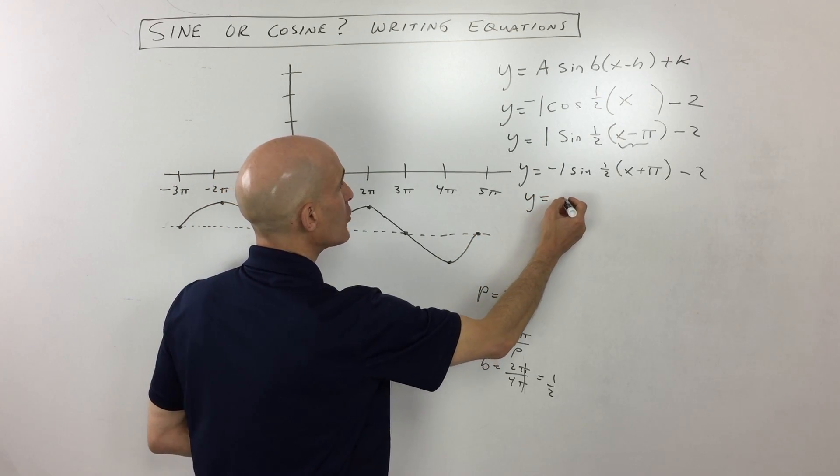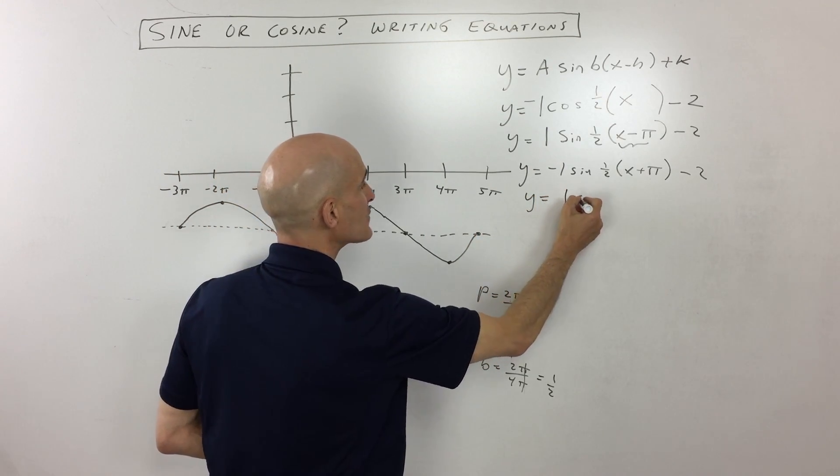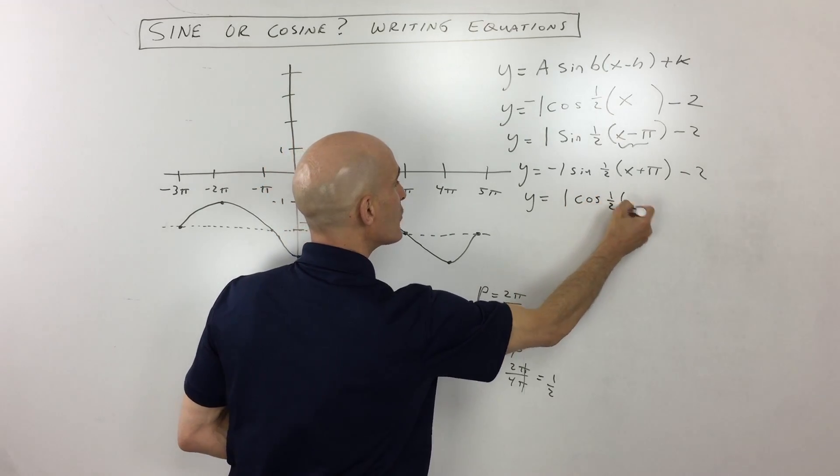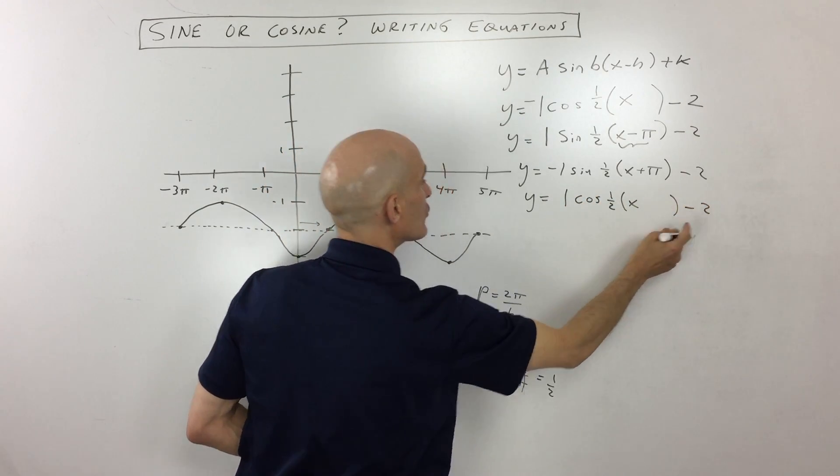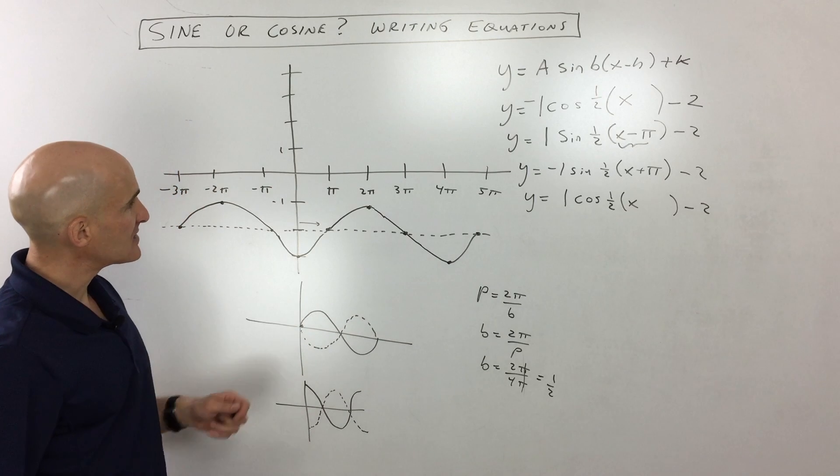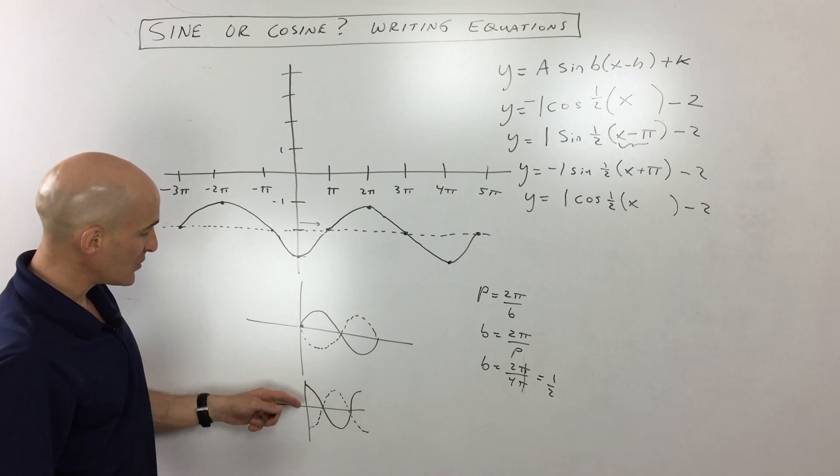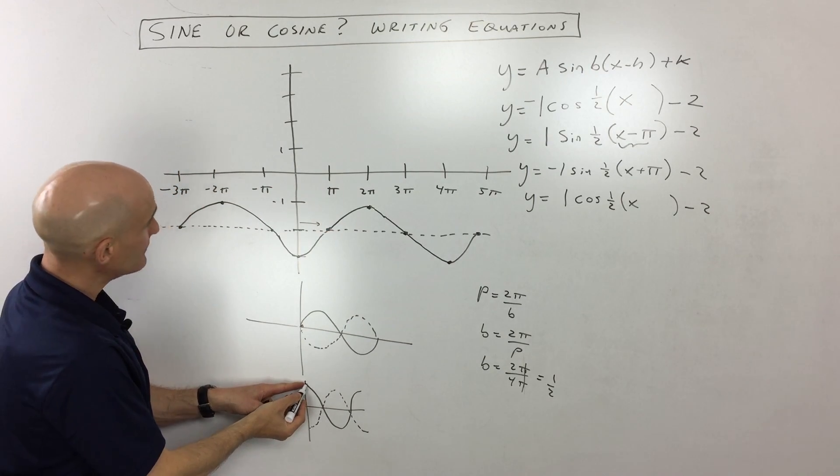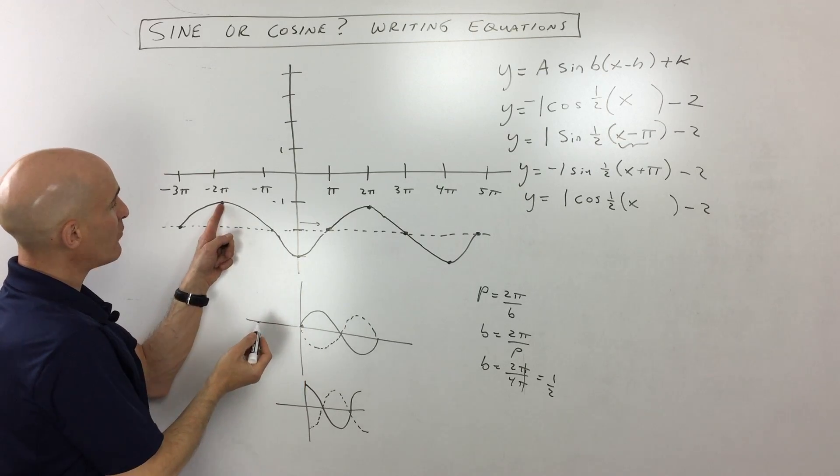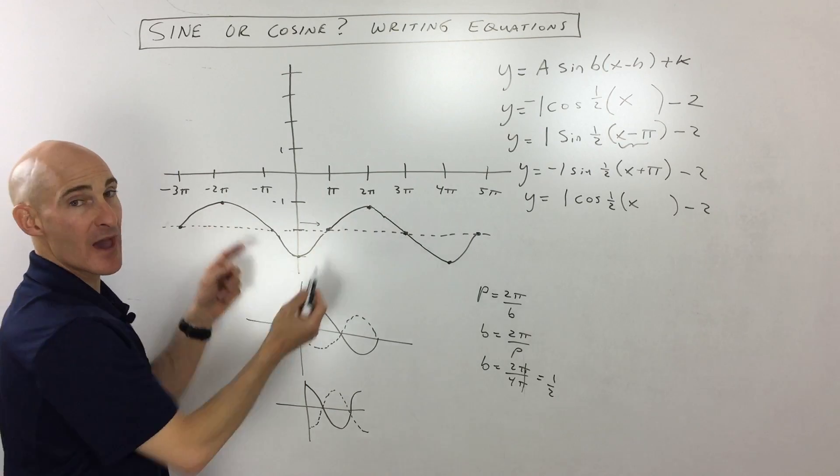And let's do maybe a cosine graph, and we'll just make this a positive one this time. The b value is the same, the vertical shift is the same. But now let's see, so if we do a positive cosine, now cosine starts over here at the max. So we could either use this point here, or we could use this point here, doesn't really matter.